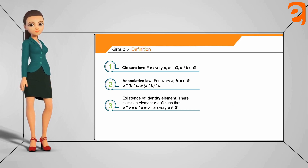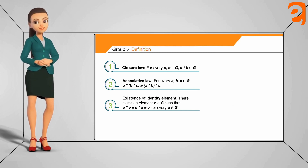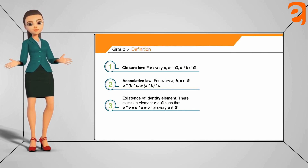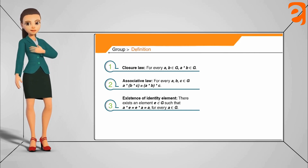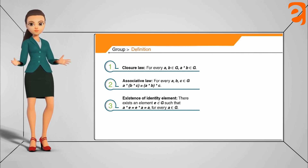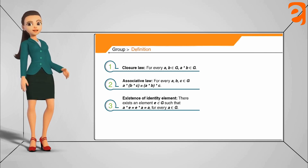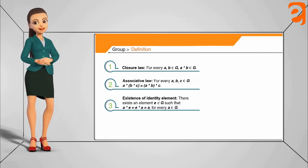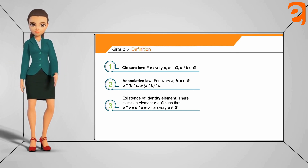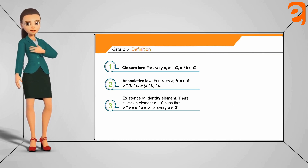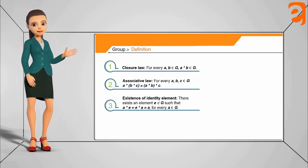The identity element means there exists an element e in the set G such that for any element a in G, a star e equals e star a equals a. Simply put, if e equals 1 and the binary operation is multiplication, then multiplying a with 1 gives a back. So a star e equals e star a equals a.